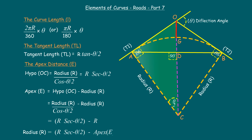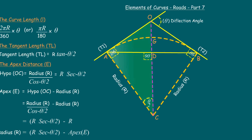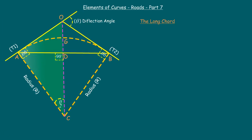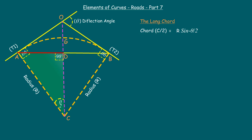The radius equals hypotenuse OC minus the apex distance. Next, the length of the long chord C: sin(θ/2) = opposite side / hypotenuse. Here the opposite side is half the long chord (C/2) and the hypotenuse is radius R. So C/2 = R·sin(θ/2), and therefore the long chord length C = 2R·sin(θ/2).